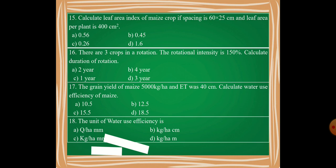Now 17th question: The grain yield of maize is 5000 kilogram per hectare and your evapotranspiration was 40 centimeter. So you need to calculate the water use efficiency of maize. Your options are 10.5, 12.5, 15.5, 18.5.